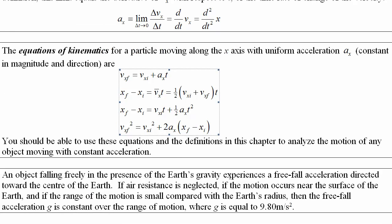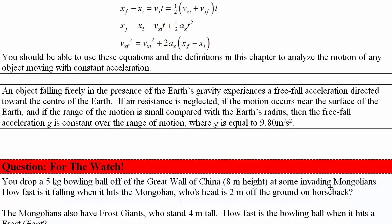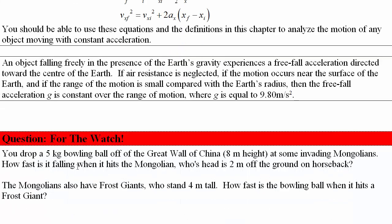If an object's falling freely in the presence of Earth's gravity, then it gets a free fall acceleration towards the center of the Earth. Now, if it's going to fall over large distances, we're going to have to use Newton's law of gravitation. But over short distances, we can say the acceleration is basically constant and about 9.8 meters per second squared. Here's a practice problem for the watch. You drop a 5 kilogram bowling ball off the Great Wall of China an 8 meter height at some invading Mongolians. So you're defending the wall and you want to know how fast this would be falling when it hits a Mongolian horse archer whose head is 2 meters off the ground. Now, we also have to be concerned with how it's going to take out these Mongolian frost giants who stand 4 meters tall. Now, how fast is the bowling ball when it hits a frost giant?